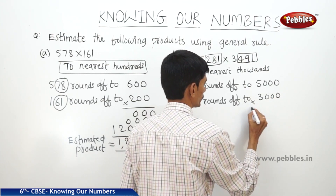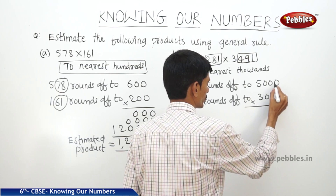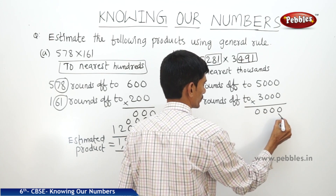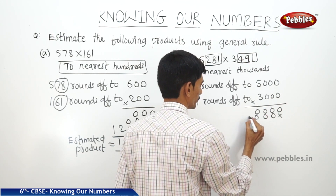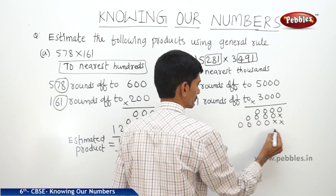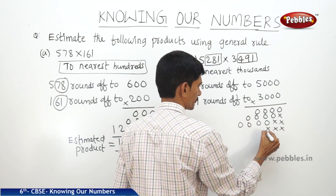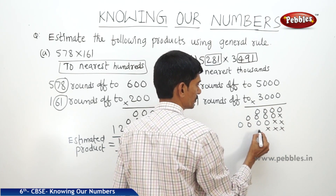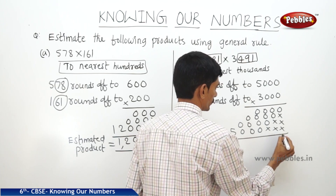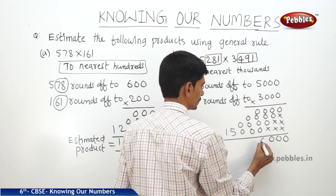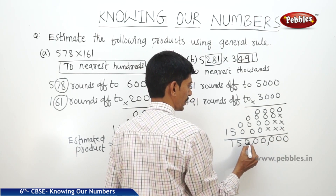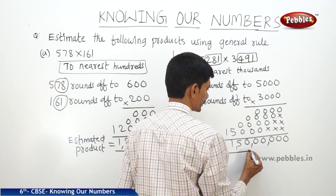So then if you multiply these two: 5000 into 3000. Multiplying 5 by 3 gives 15, and together there are 6 zeros. So 1, 10s, 100s, 1000s, 10,000s, lakhs, 10 lakhs, crore — so the result is 1 crore 50 lakhs.